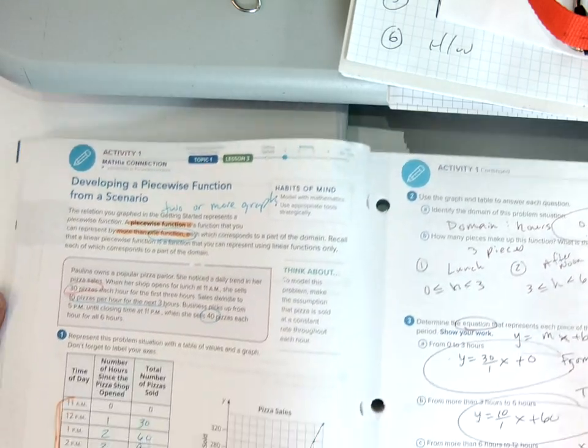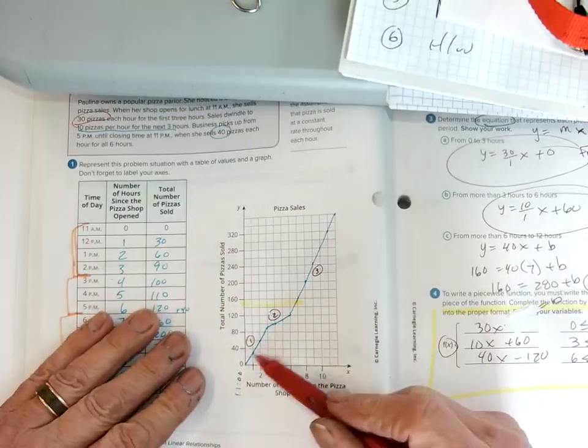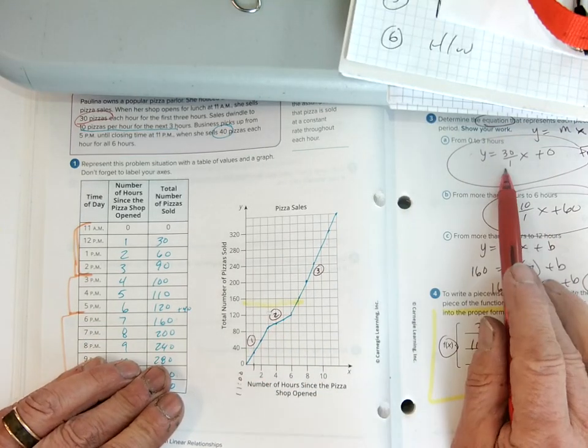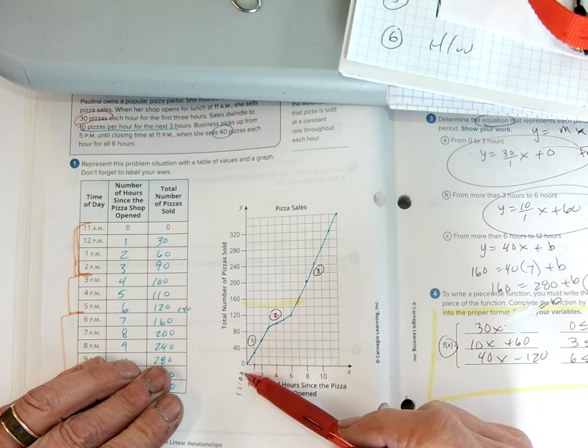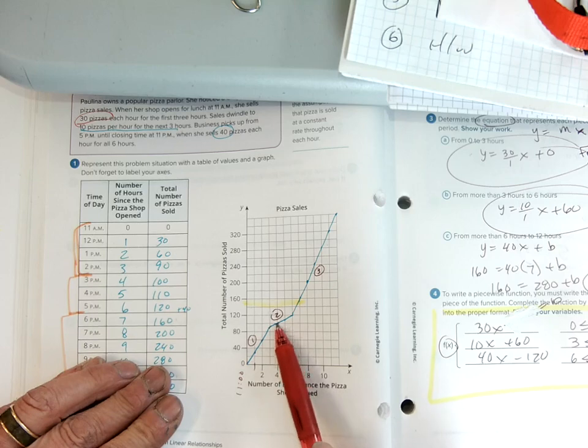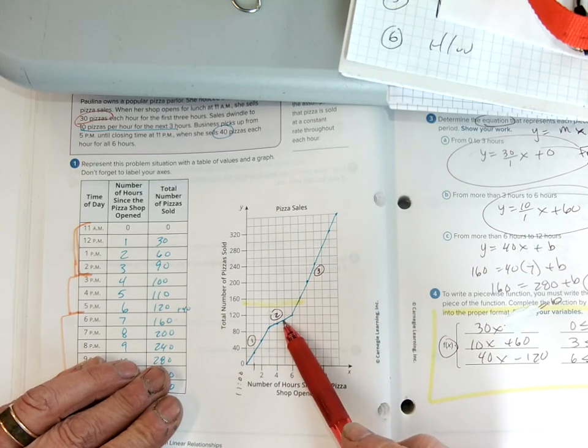So then we needed the equations of all three of these. So if I take a look at my first line, here it is, has a slope of up 30 over one, because we know we sell 30 pizzas apiece. And we know its y-intercept is zero. The next one's a little bit harder to find the y-intercept. I know that the slope is 10. I've got my 10x.